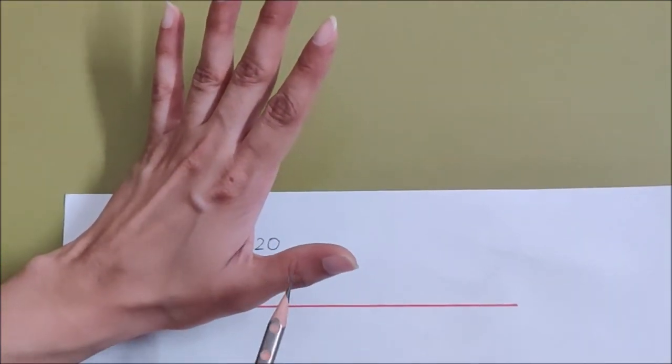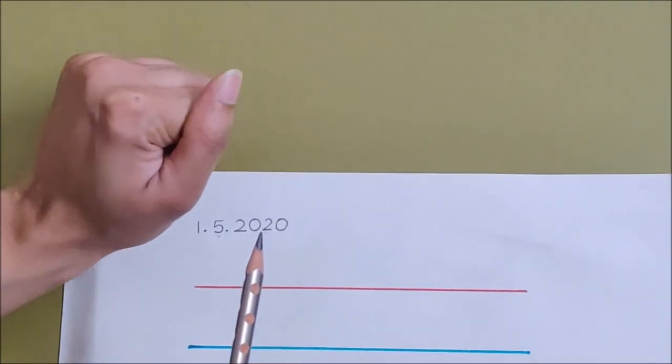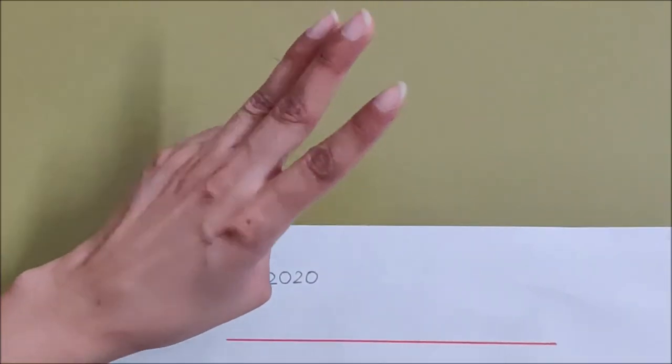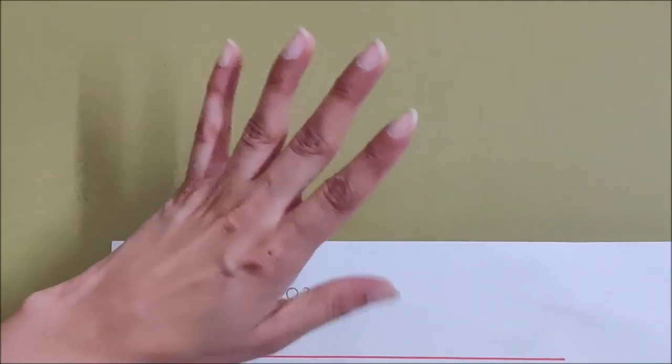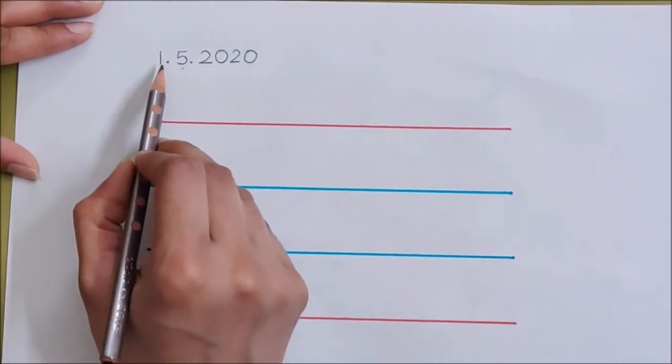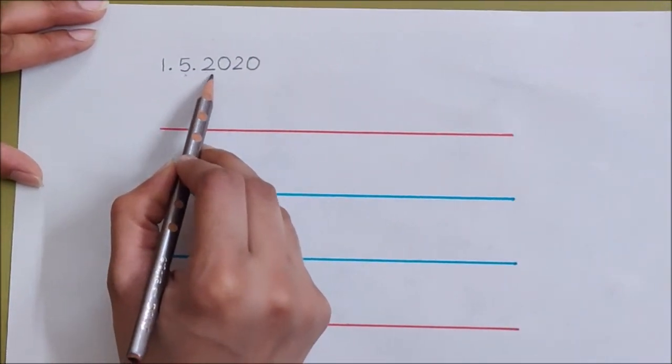Let us see how. Count on your fingers children with me: January, February, March, April, May. So May is the 5th month, and that is why I have written here 5: 1.5.2020.